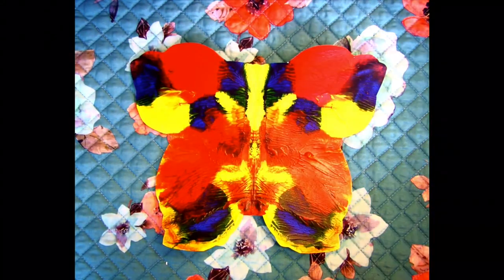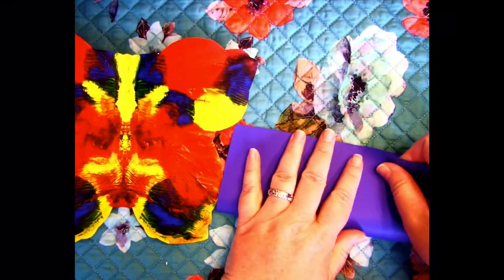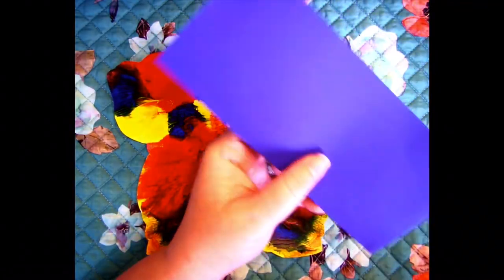After your butterfly wings are done, you can use markers, construction paper, and any other items to decorate your butterfly. Keep in mind, for it to be symmetrical, whatever you do to one side you must do to the other.